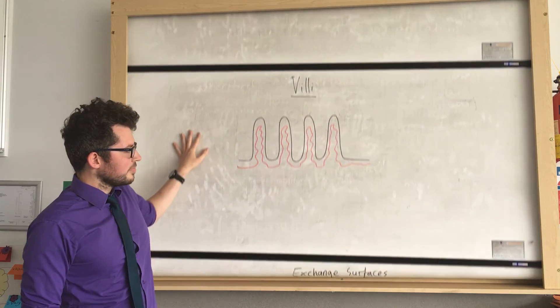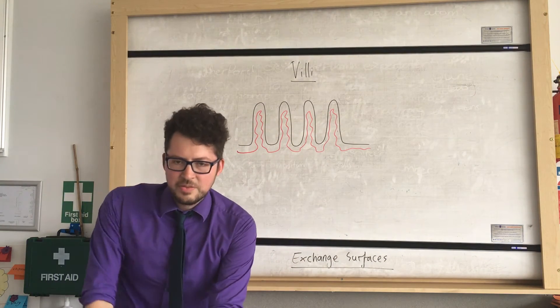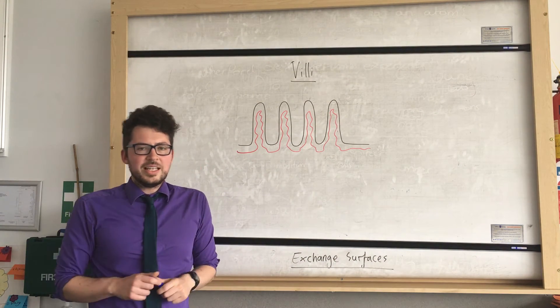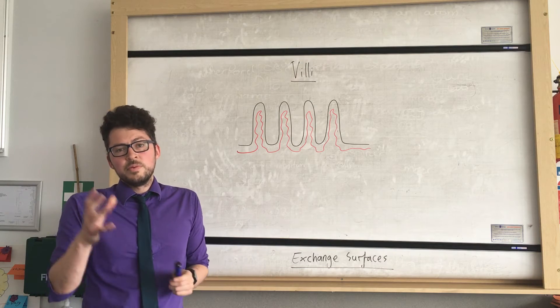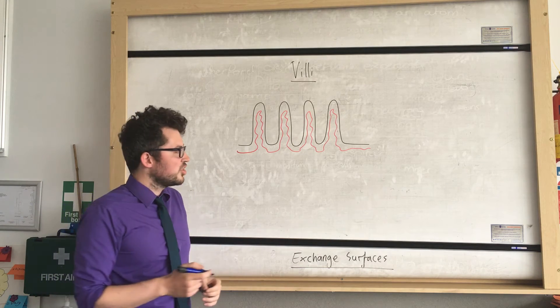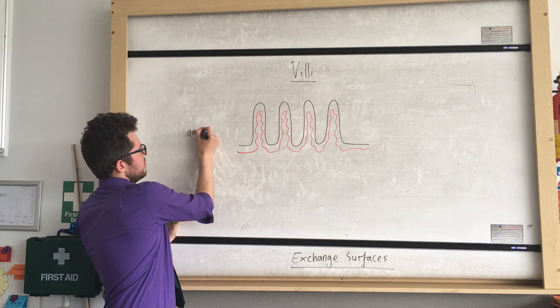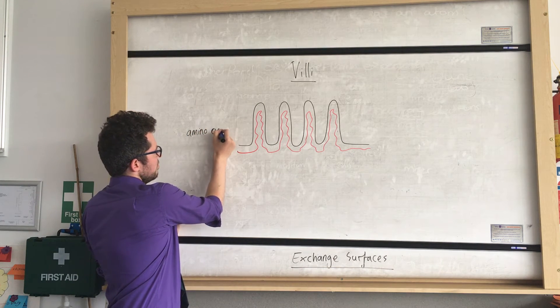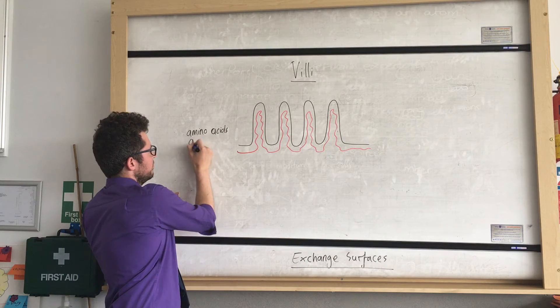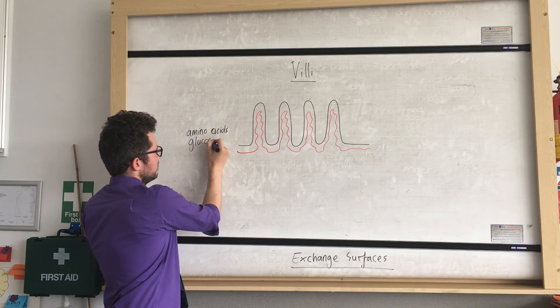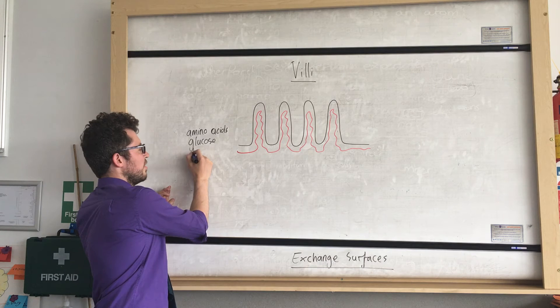Another example you need to know is villi. The villi are found in the small intestine and allow us to absorb the materials we need from digestion, for example amino acids, glucose, and fatty acids and glycerol.